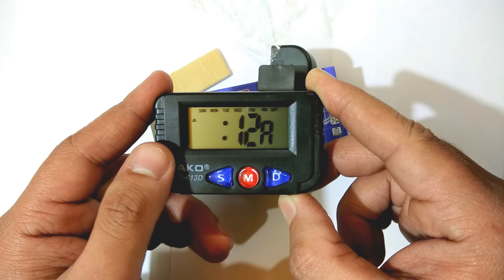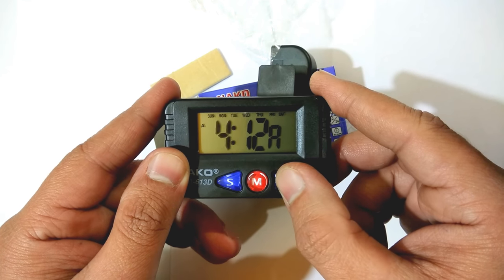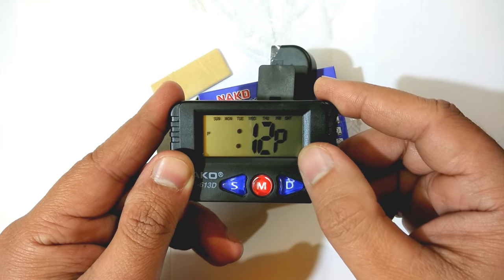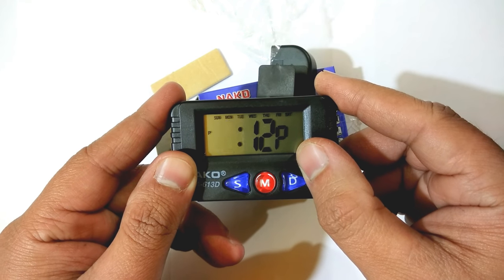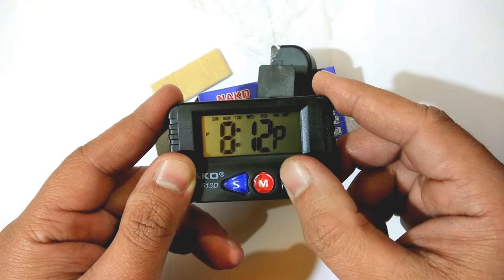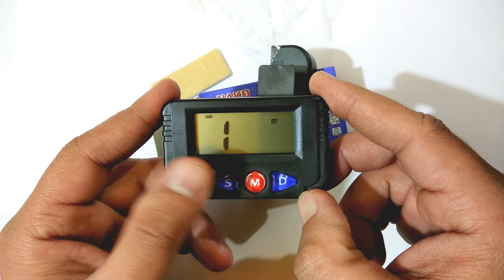When the minute is set, press this S button again. This is for AM/PM. A means AM and P means PM. This P here means PM.